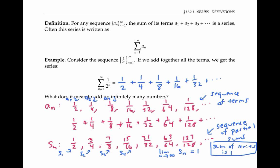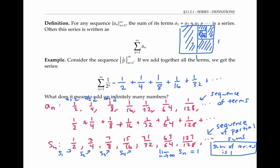In fact, for this particular series, there's a nice way to say that the sum is one using geometry. If I draw a square with side length one and fill in half of the square, that gives me an area of one half. Drawing a line gives an additional area of one fourth. Here's an area of one eighth, one sixteenth. And if I keep spiraling in, I keep adding areas that exactly match the terms of this series. In the limit, I'll have filled in the entire square, which has an area of one.